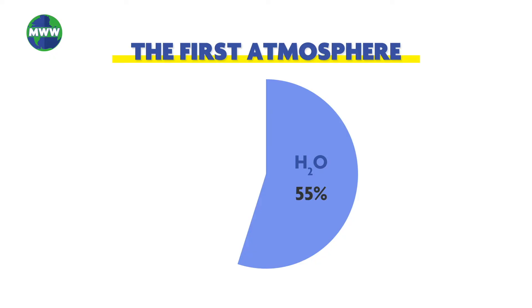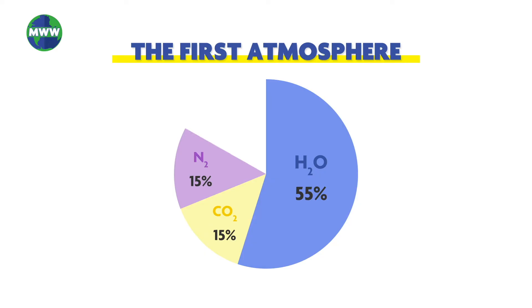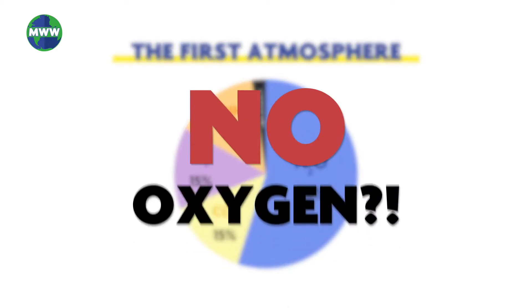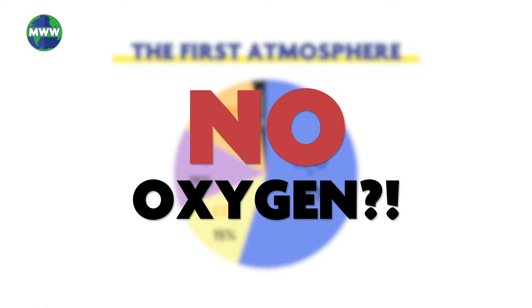The first atmosphere consisted of about 55% water vapor, 15% carbon dioxide, 15% nitrogen, 15% ammonia, and trace amounts of methane. Wait — no oxygen?